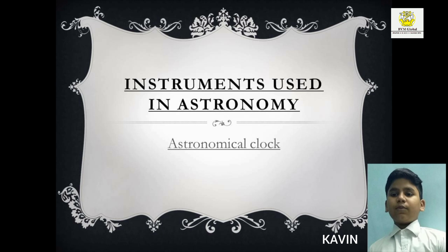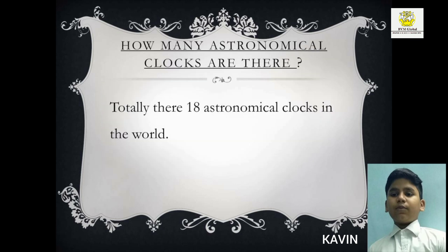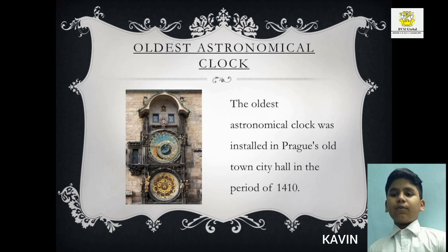Today I am going to talk about the astronomical clock. An astronomical clock, also known as horology, shows the relative positions of the Sun, Moon, Earth and Zodiac constellations. There are a total of 18 astronomical clocks in the world. The oldest astronomical clock can be found in Prague's Old Town City Hall and was built in 1410.